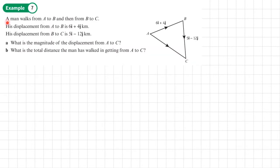Example 7. A man walks from A to B and then from B to C. His displacement from A to B is 6i plus 4j. His displacement from B to C is 5i minus 12j. Part A, we need to work out the magnitude or the size of his displacement from A to C. First of all, we need to work out what is the vector from A to C, then we can work out the magnitude of it.